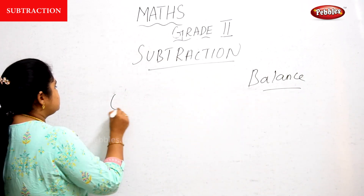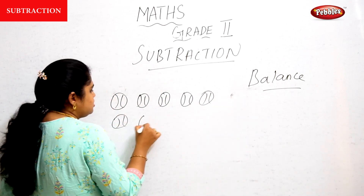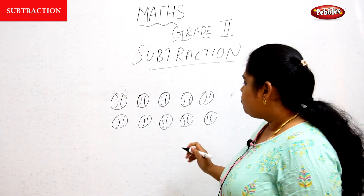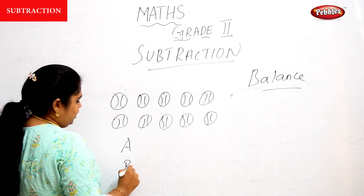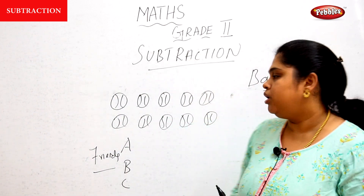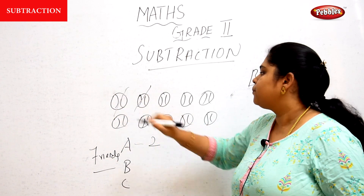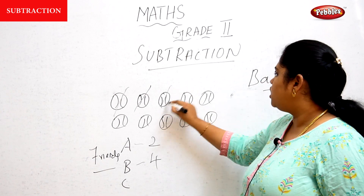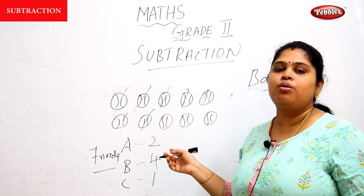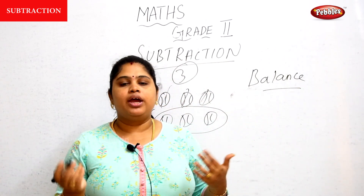For example, you have ten balls. There are three friends — Friend A, Friend B, and Friend C. Two balls were given to Friend A, four balls were given to Friend B, and one ball was given to Friend C. So how many balls will be remaining? Only three balls will be the balance, so three is the answer.